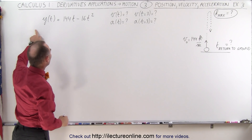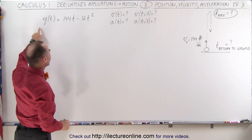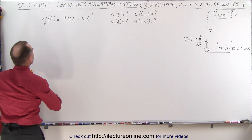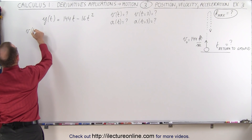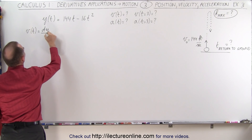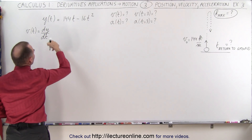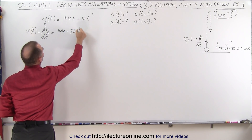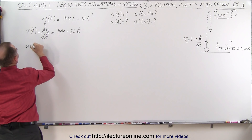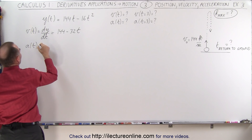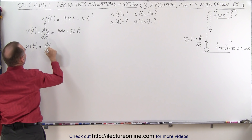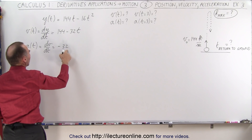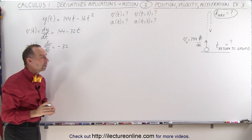We start with the position equation and find the velocity and acceleration by taking the derivative, just like in the previous video. The velocity as a function of time is the derivative of position with respect to time — in the vertical direction — so v(t) equals 144 minus 32t. The acceleration is the derivative of velocity, dv/dt, which equals minus 32. Notice that acceleration is a constant — it does not depend on time.